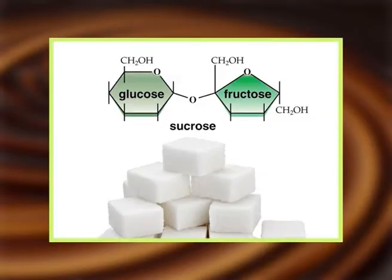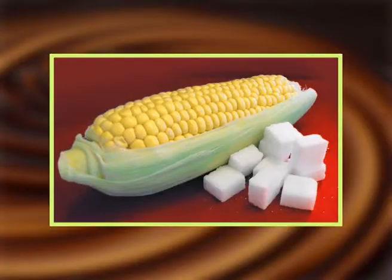Sweeteners improve texture and palatability, enhance flavors, and are usually the cheapest sources of total solids. Sugars, including lactose from milk components, depress the freezing point so that ice cream has some unfrozen water at typical serving temperatures of minus 15 to minus 18 degrees Celsius — without this unfrozen water, ice cream would be too hard to scoop. Sucrose is the main sweetener; substituting all or part with corn-derived sweeteners contributes a firmer and chewier body, is an economical source of solids, and improves shelf life.